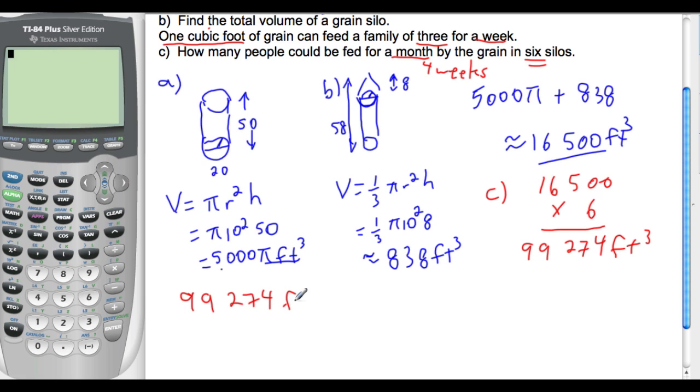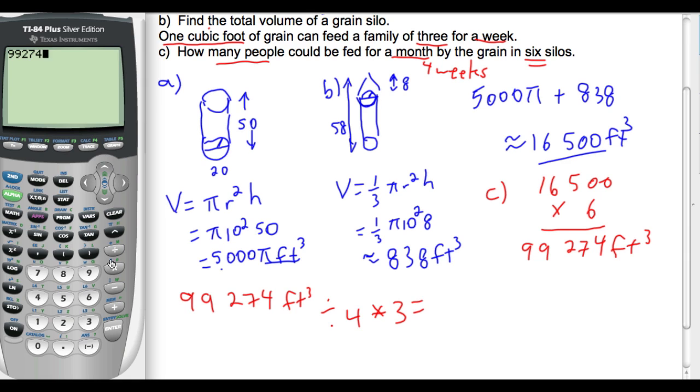So, 99,274 cubic feet of grain. One cubic foot can feed a family of three for a week. That means you need four cubic feet to feed a family of three for a month. So, how many times does the four weeks? And then, that's a family of three, and the question asked for how many people. Then, we multiply by three because there's three in the family. Well, 99,274 divided by four times three will give us 74,456 people. We won't round, we'll leave people because it makes more sense to leave them to the nearest whole person.